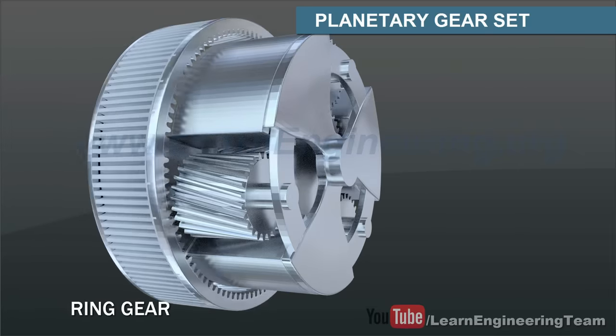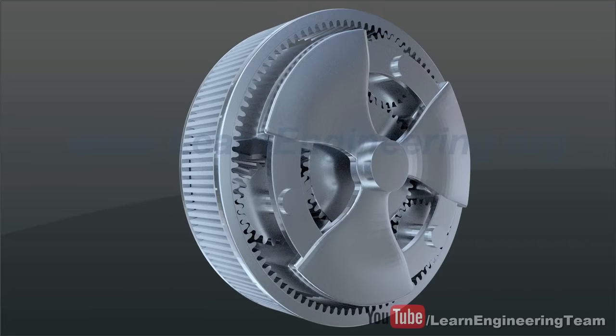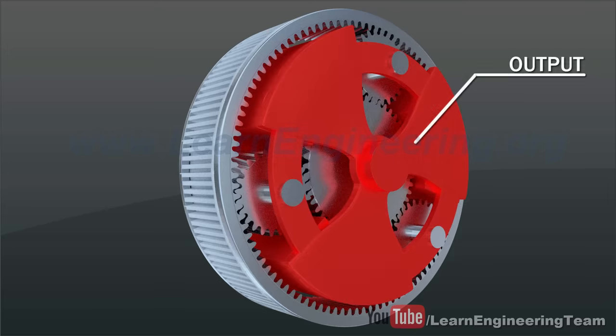Planetary gear sets have two inputs and one output. In automatic transmission, the output rotation is drawn from the planet carrier. The two inputs are connected to the ring and sun gears.